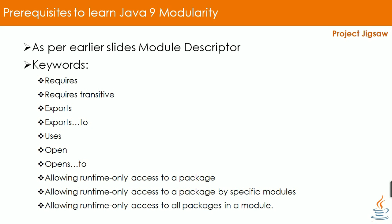The next keywords are exports and exports to. An exports module directive specifies one of the module's packages whose public types — including their nested public and protected types — should be accessible to all other modules in the application. The exports to directive enables you to specify, in a comma-separated list, which specific module or modules can access the exported package. This is known as qualified exports.